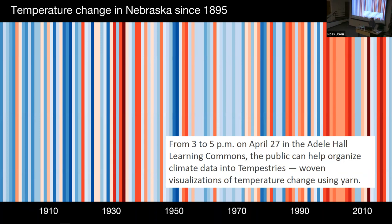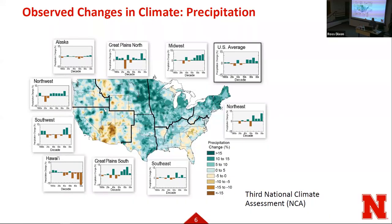If you really enjoyed these visualizations, make sure you come by Adele Hall Learning Commons on April 27th from 3 to 5 p.m. The library is helping organize some visual tapestries — woven visualizations of texture using yarn. I'm super excited about this. What are some other important observed changes in climate? We can think about precipitation changes.